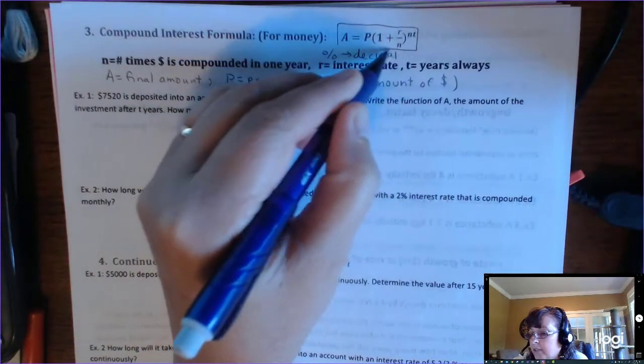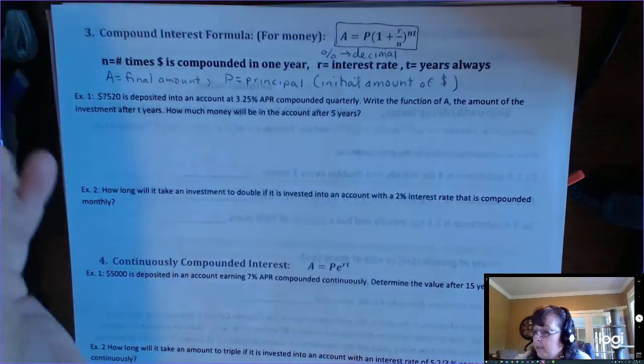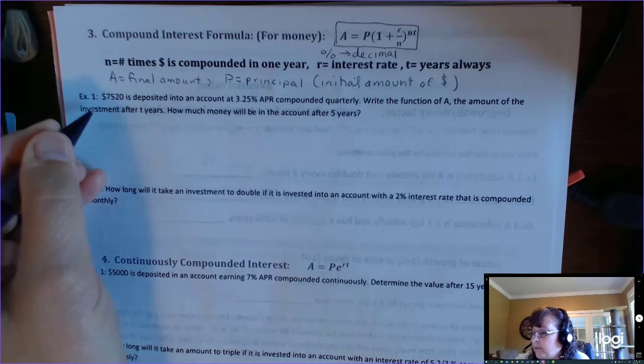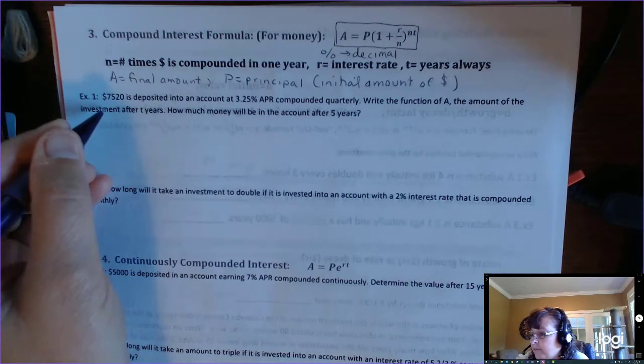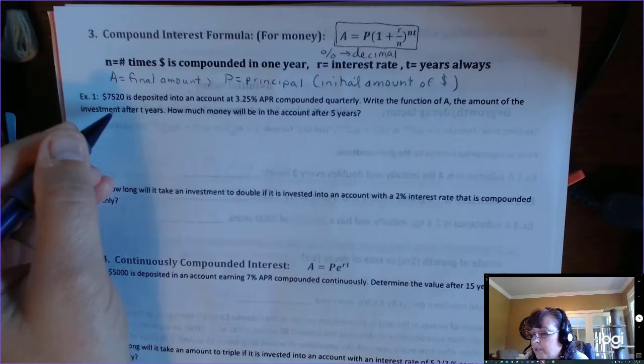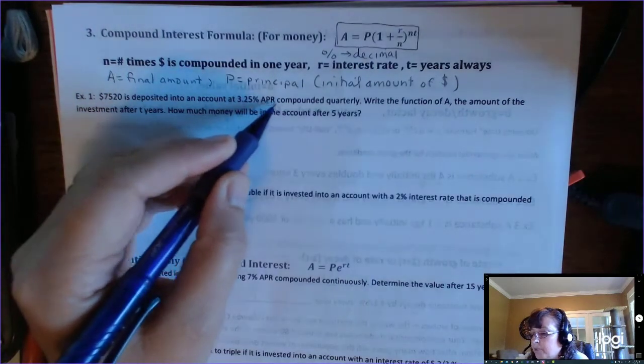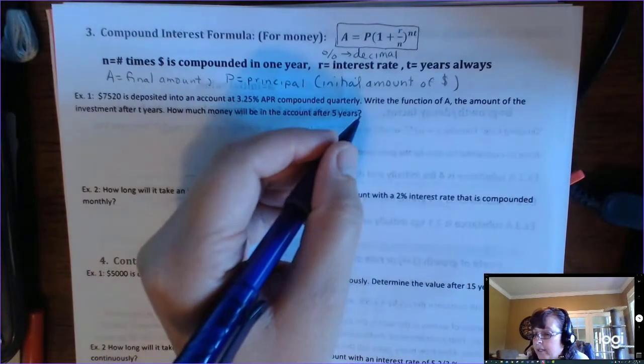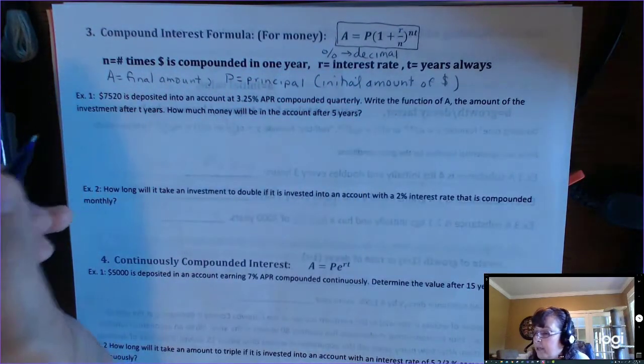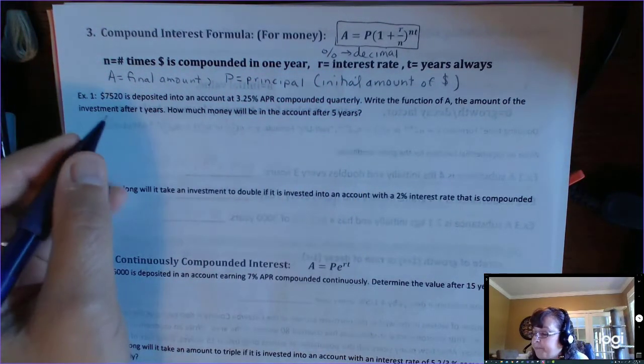So, for example, if you have this one: $7,520 is deposited into an account at 3.25% annual percentage rate, compounded quarterly. Write the function A, the amount of investment after T years.